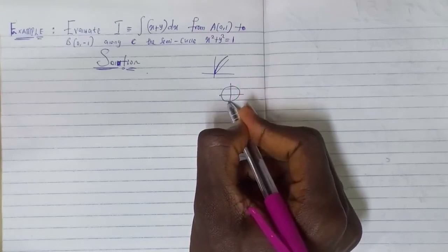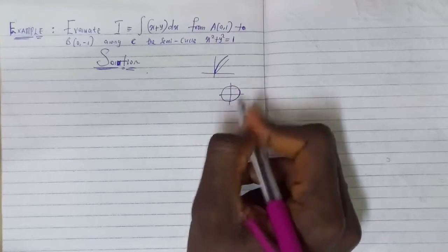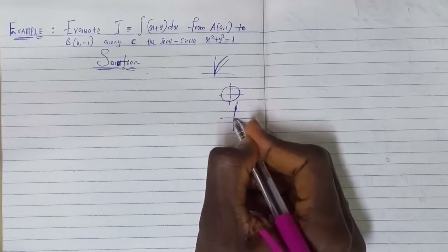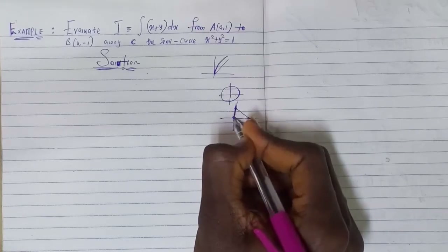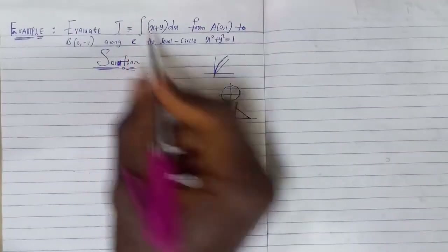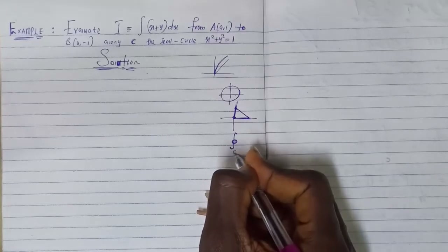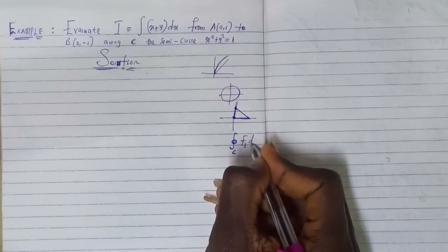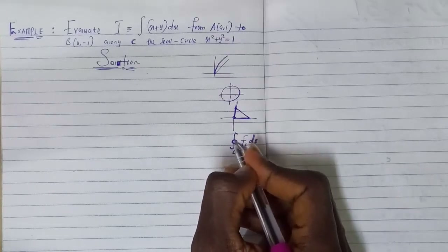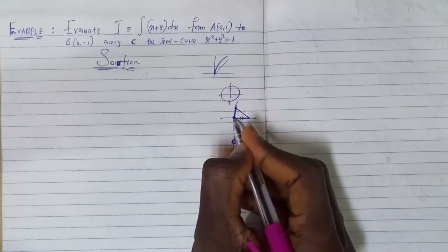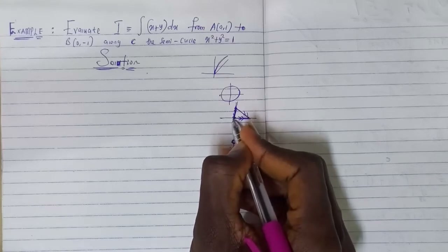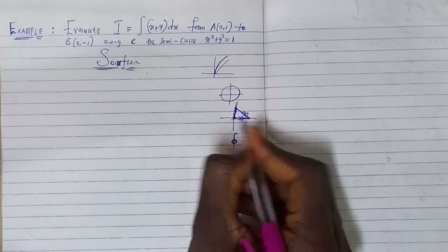Sometimes you have the whole cycle, and sometimes you have a closed path C — a closed curve. You can also have a closed path in the form of a triangle, with particular points forming a closed shape. Whenever you have a closed path, we always write the integral along a closed path C as the integral of f(t) ds. In this case, the direction is counterclockwise — starting from this point and moving counterclockwise in this direction.